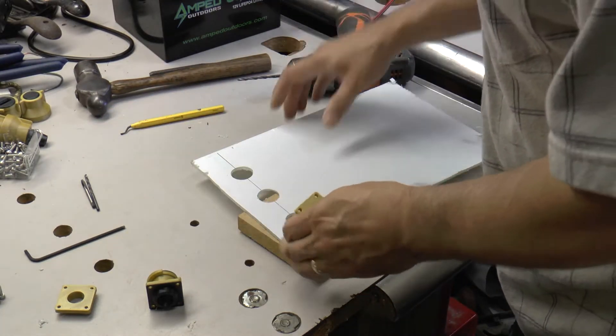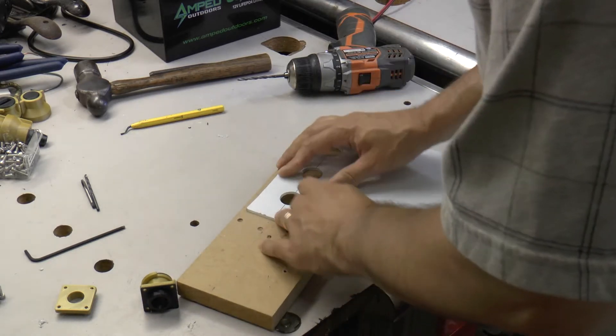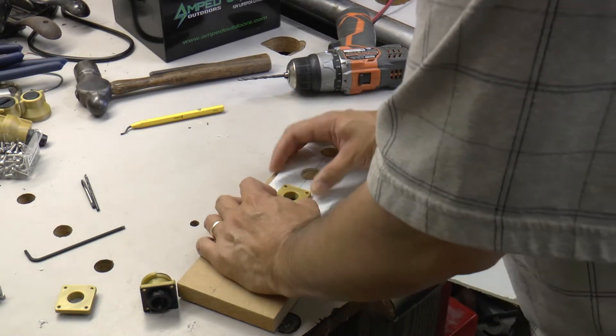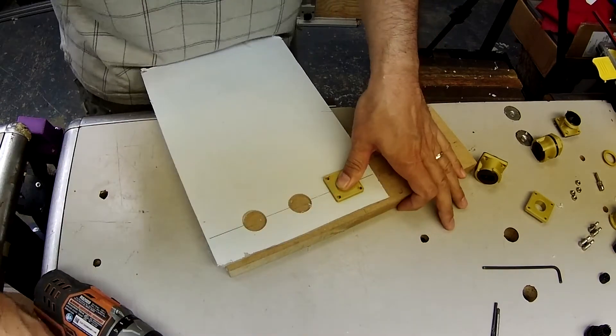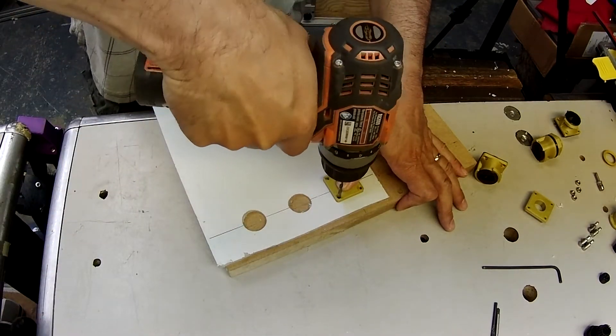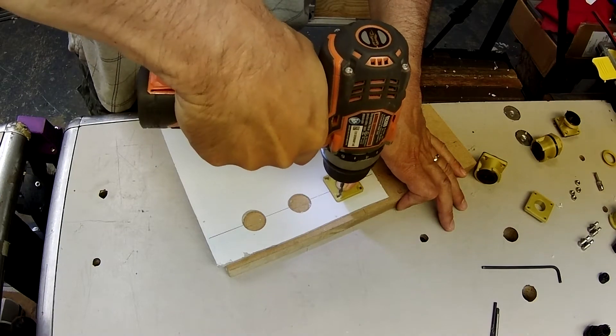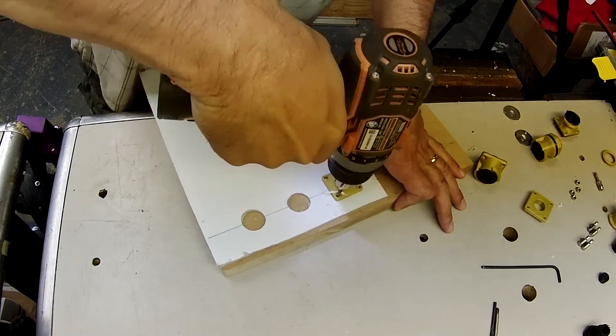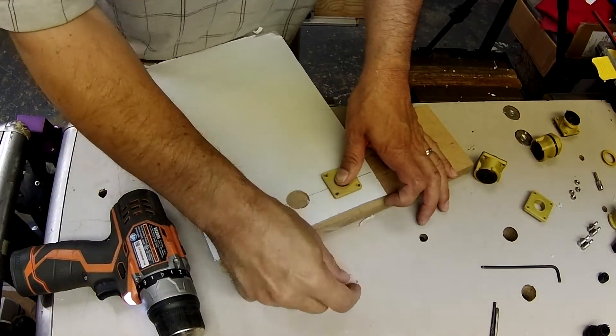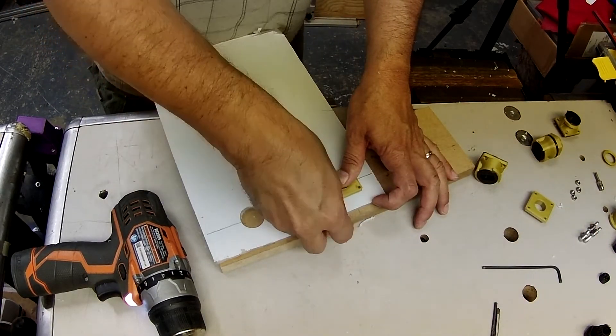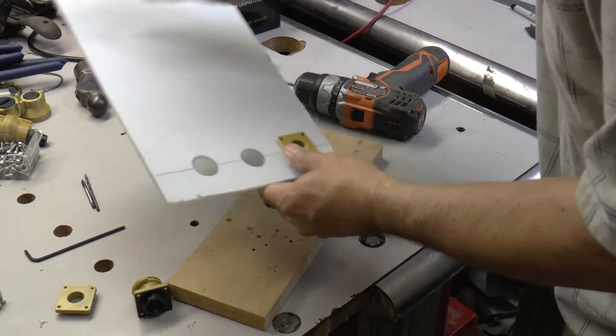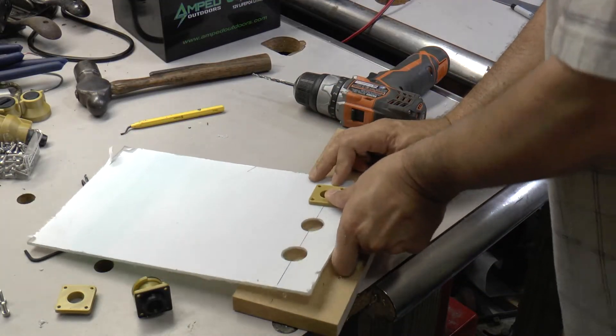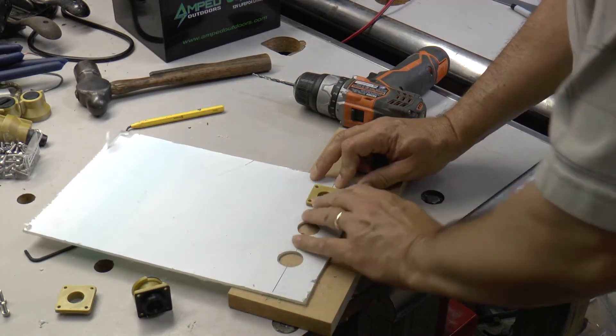We'll use our template tool to lay on top and we'll start by drilling the first hole. And then we'll take a screw and drop it in place to locate that hole. Now that that tool is fixed in place, we can do the other three.